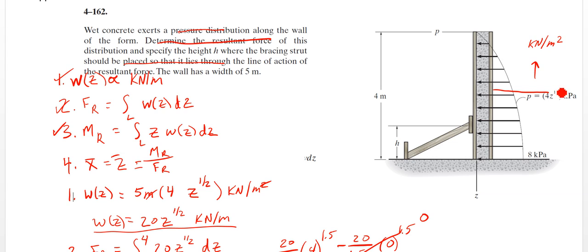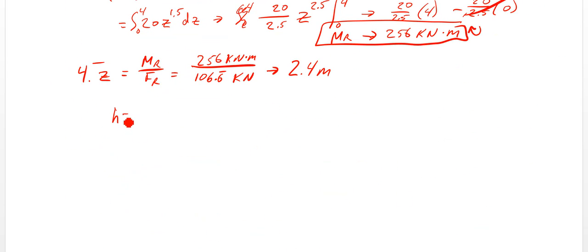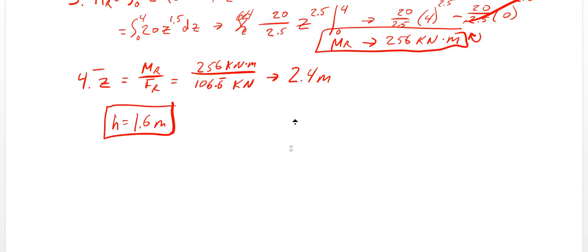So if z is 0, we have 0 pressure. So it starts at the top, working our way down. So that means that we have this here is 2.4 meters. So this H then is going to be 1.6 meters. So I'll just add that down here. So H equals 1.6 meters. So there you have it.